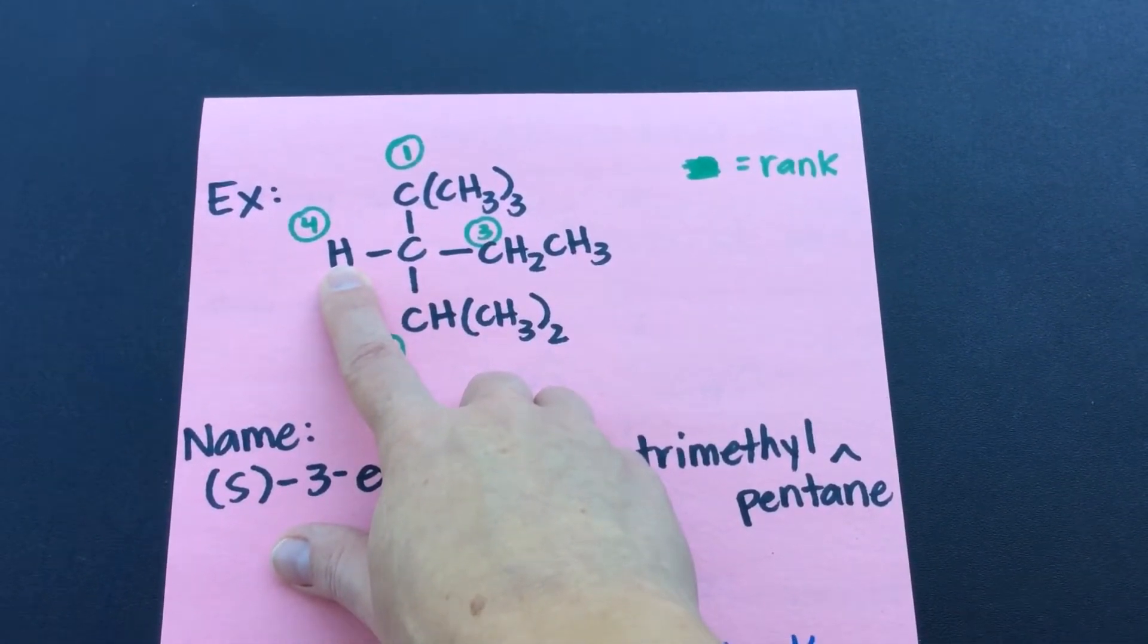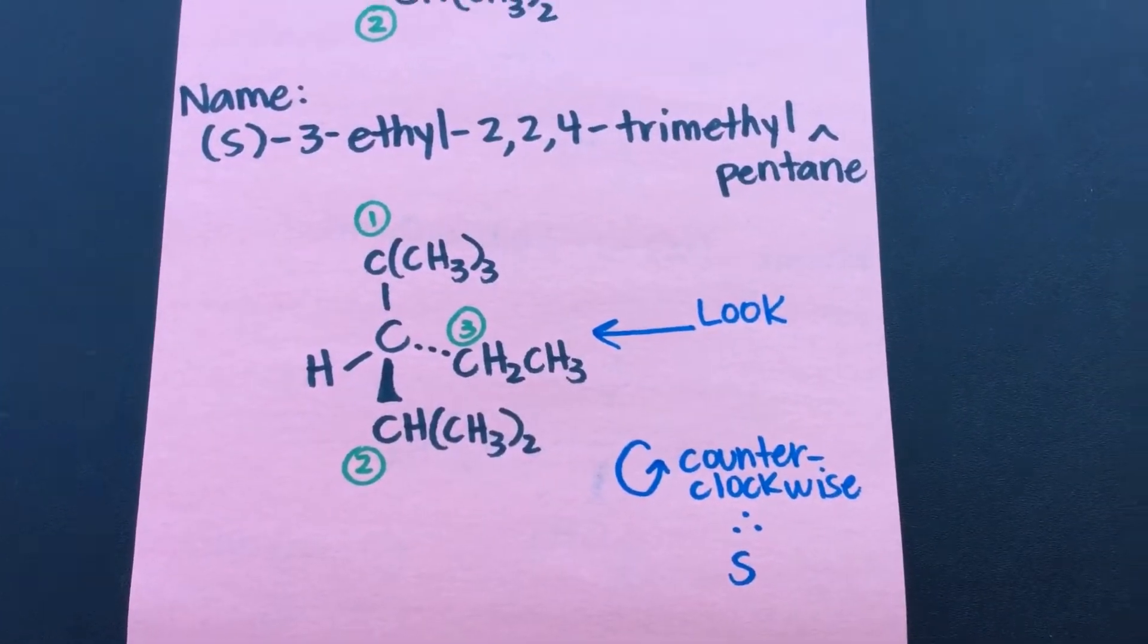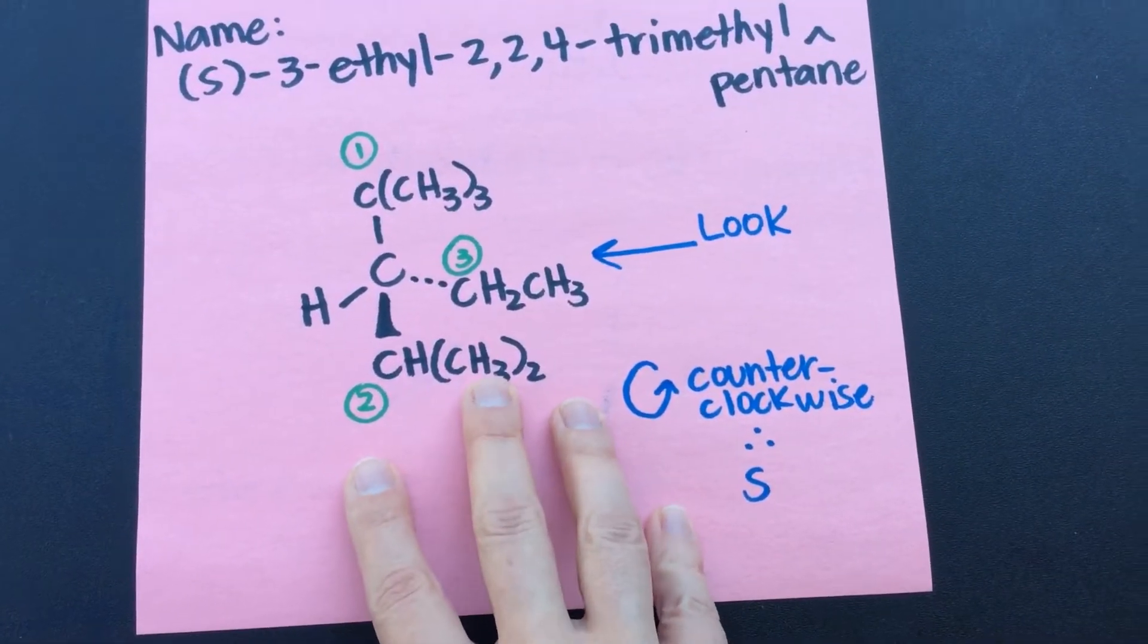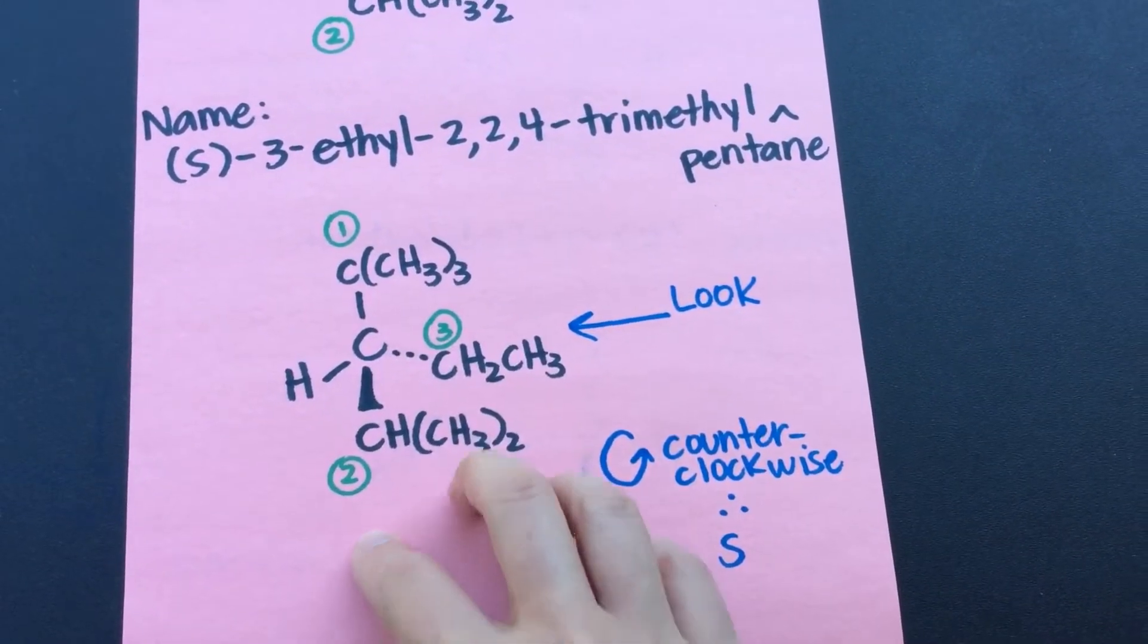And obviously that hydrogen's number four. Hydrogen's always going to be the lowest. So if you break out your model kit, or again, once you get to a point where you can just visualize that hydrogen sticking behind, and you're just looking down this space, right...